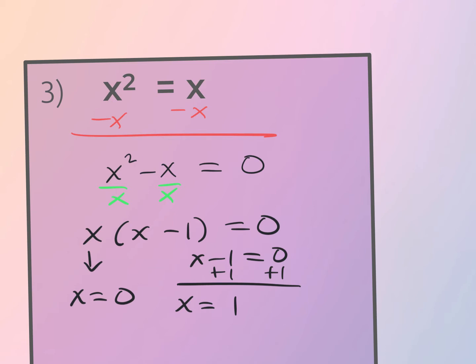Sometimes it may be the same number if it turns out to be a perfect square trinomial that we're factoring. However, most of the time it'll be two different numbers.